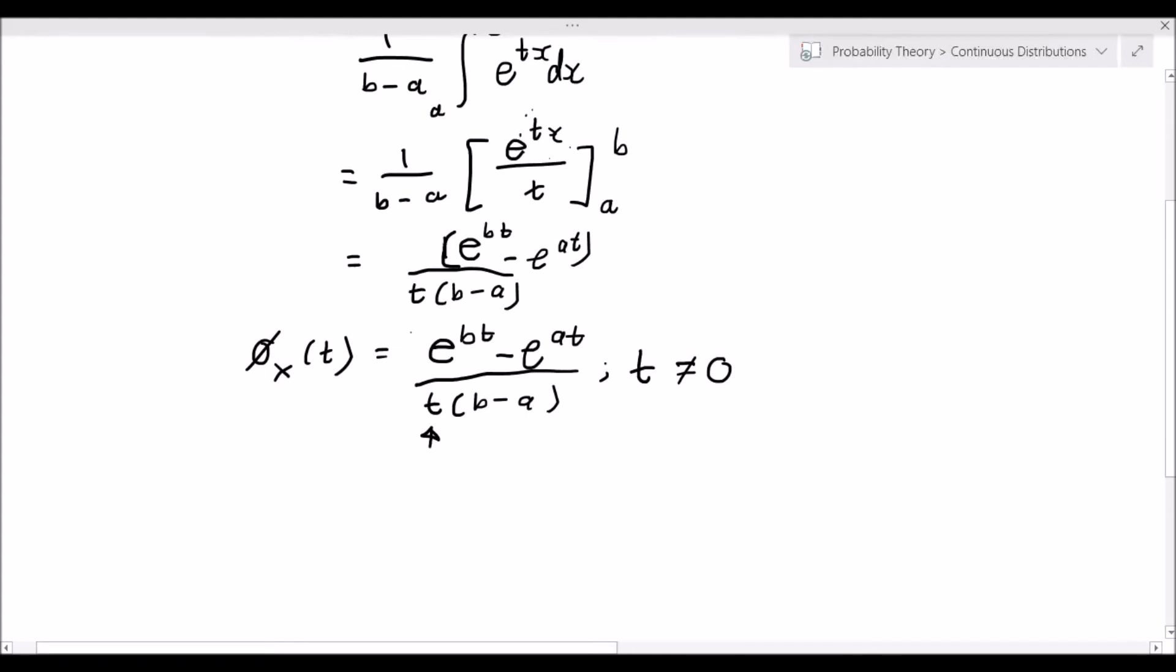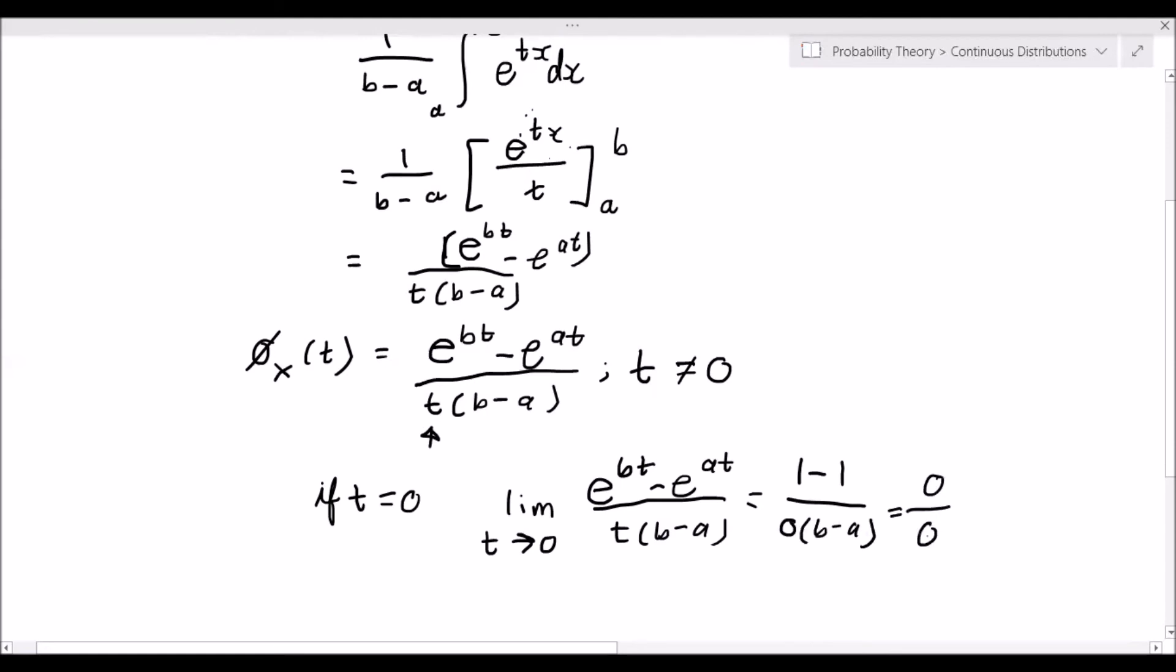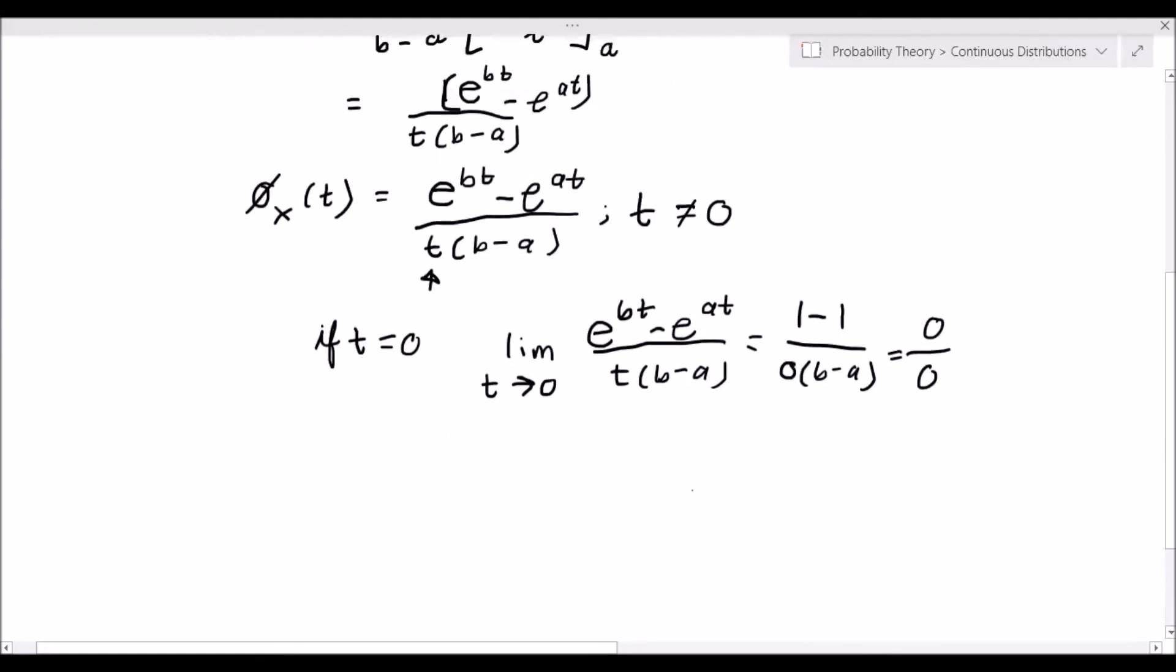Well, what if t is equal to zero? What do we do then? We need to find the limit as t goes to zero of e to the bt minus e to the at over t times b minus a. If we plug in t equals zero, we end up with one minus one over zero times b minus a, so we get zero over zero. This suggests that we need to apply L'Hôpital's rule.